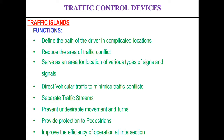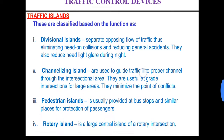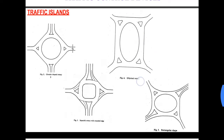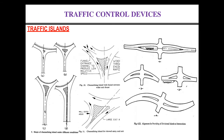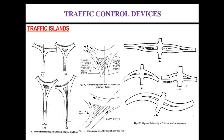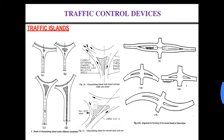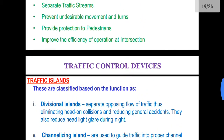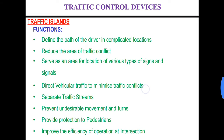Firstly, let us try to understand what are traffic islands. Traffic islands are structures which are built in between the roads in order to improve the safety of road users and also to improve the efficiency of traffic. Here you can see in these figures there is some area in between the roads. This area can be provided for various purposes. We will try to understand why we provide that area and why these traffic islands are built.